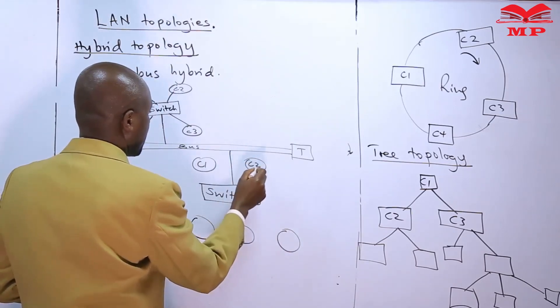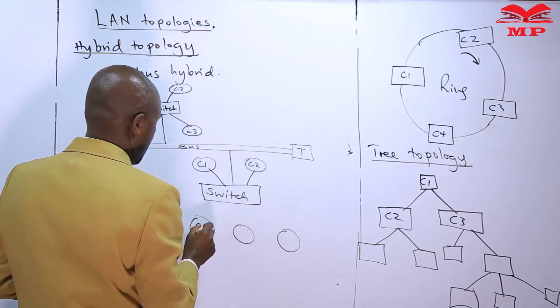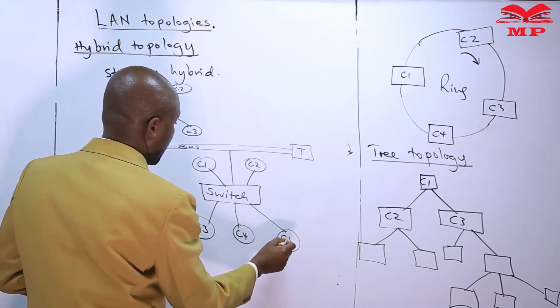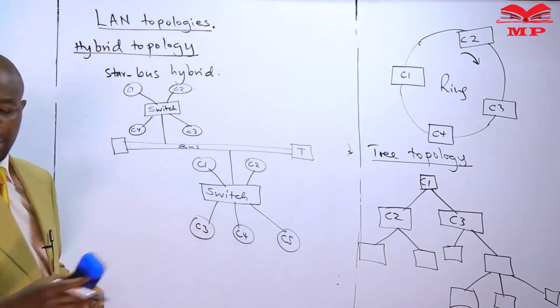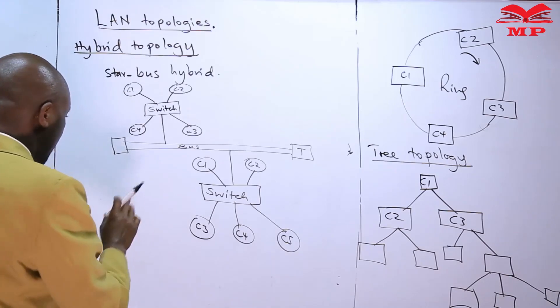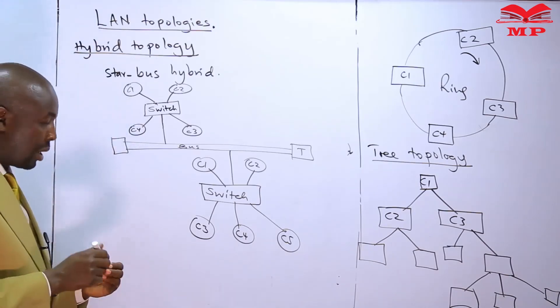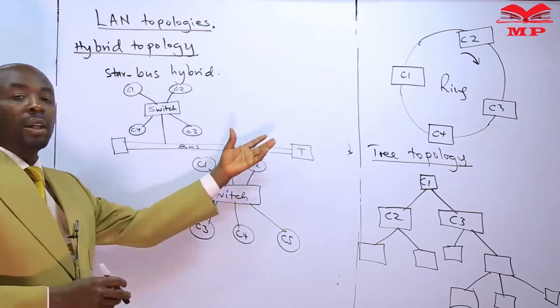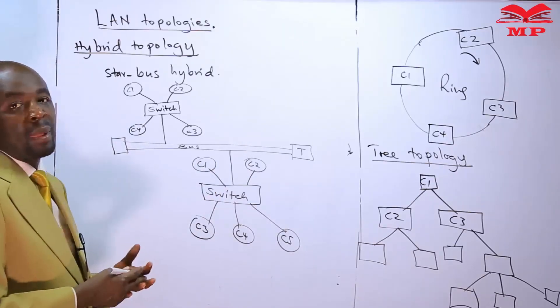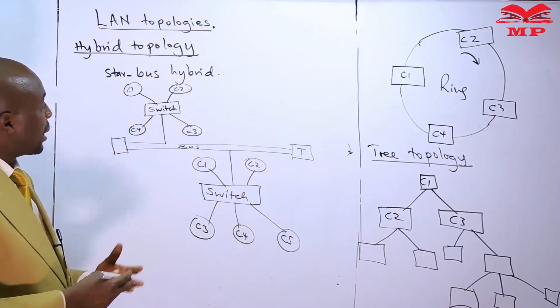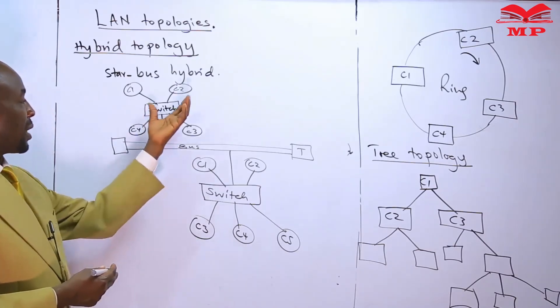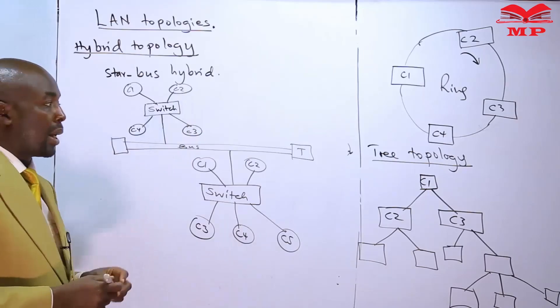So that is the star bus hybrid topology. Star networks are connected to a bus. The interest here is better quality. It provides better quality or better services than if you're using the star alone or using the bus alone.